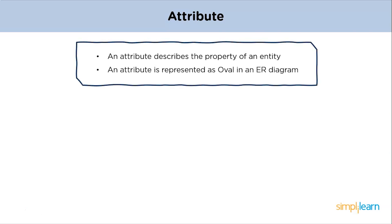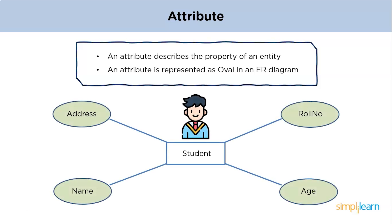An attribute exhibits the properties of an entity and is illustrated with an oval shape in an ER Diagram. In the example, student is an entity and the properties of student — such as address, age, name, and roll number — are called its attributes.